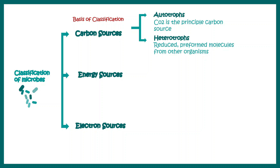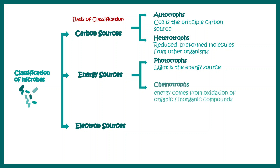In terms of energy sources, they are subdivided into two groups: phototrophs, which use light as an energy source, and chemotrophs, where the energy source is actually an organic or inorganic molecule — the energy is generated by their oxidation.